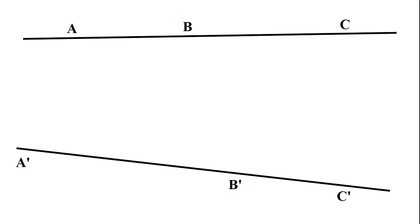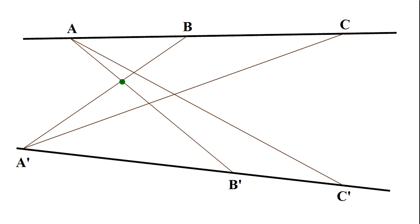We're going to connect some of these points together to get our result. So we'll start out by connecting A with B prime, and correspondingly B with A prime. You'll notice that these two lines have a point of intersection, and we'll mark that with a green dot. We're going to draw two more pairs of lines, so we'll draw A, C prime, and correspondingly C, A prime, and you'll notice that these two lines also have a point of intersection. We'll mark that with the green dot.